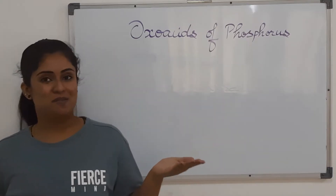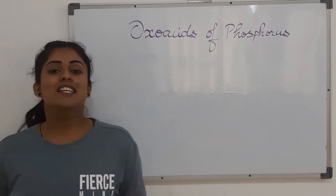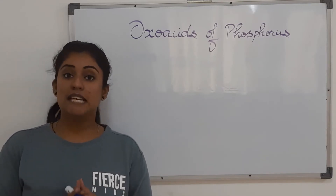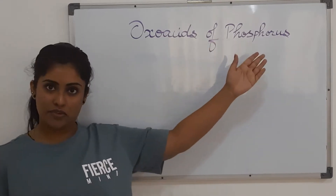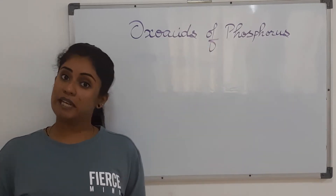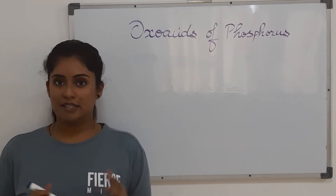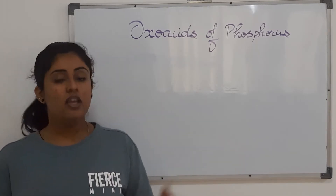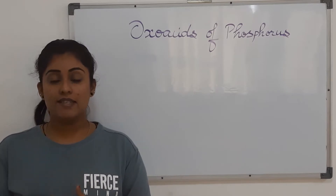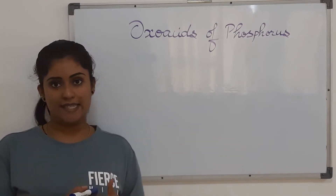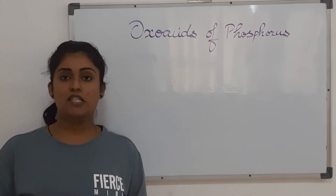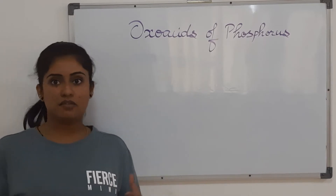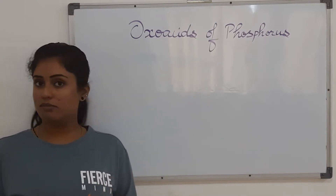Hello, welcome to Chemistry Travels. Today we are going to learn how we can draw 10 different oxoacids of phosphorus and also name them. This is something very similar to what we have done for oxoacids of sulfur, and here also we'll be grouping these 10 oxoacids into three different classes based on their similarities in structure, so that it becomes easier for us to draw and name them.